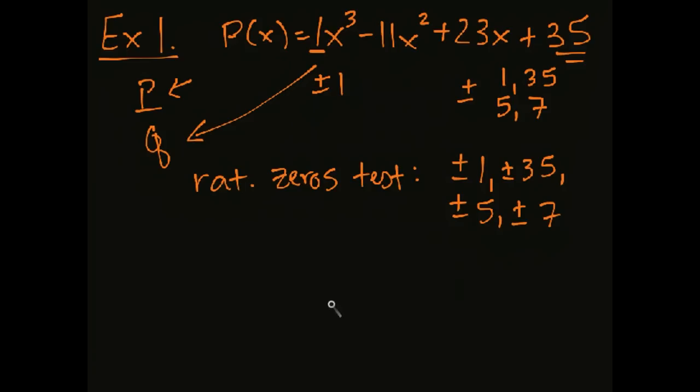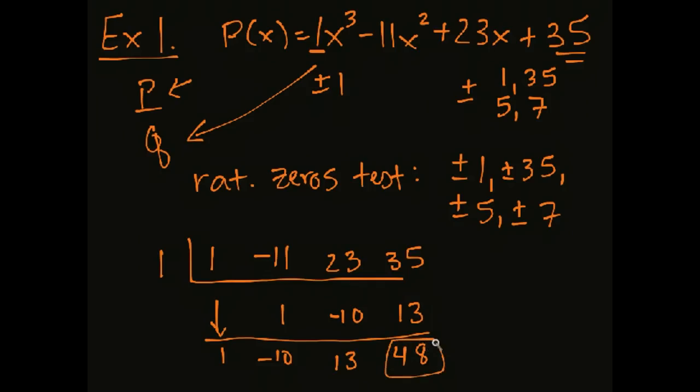Let's use synthetic division to test one. Maybe I'll just start off with positive one, just as a generic choice here. So remember, synthetic division, we need to write down all the coefficients, remembering to put zeros in as placeholders where needed. We don't need them this time. And carry that one down. One times one is one. Negative 11 plus one is negative 10. One times negative 10 is negative 10. So we get positive 13. So here we don't get zero. We get 48. So because this is not equal to zero, that means one is not a zero of p(x).